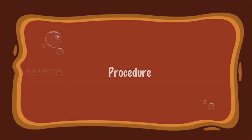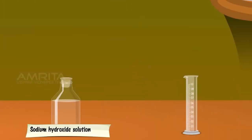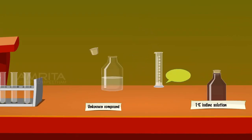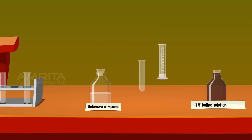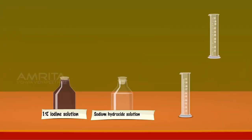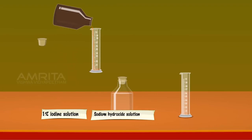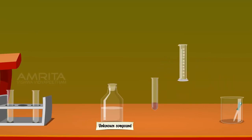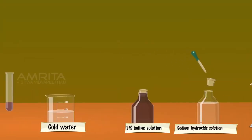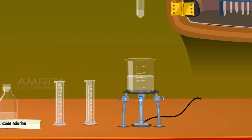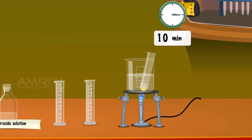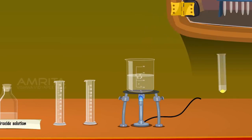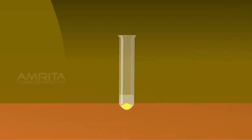Iodoform test. Procedure: Take a measuring jar and pour 1 ml of the given unknown liquid into it, then pour it into a dry test tube. Take 1 ml of 1% iodine solution in a measuring jar and add it to the test tube. Add dilute sodium hydroxide solution dropwise until the brown colour of iodine is discharged. Warm the mixture gently in a water bath. Formation of a yellow precipitate of iodoform indicates the presence of an alcoholic group.